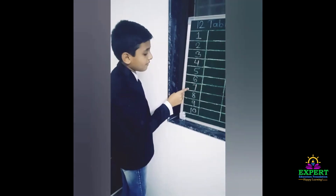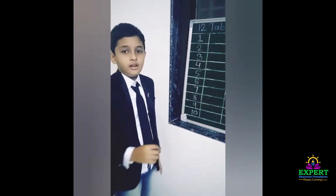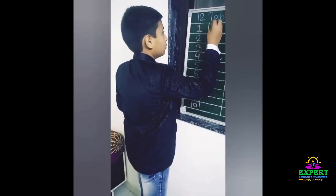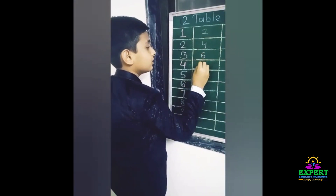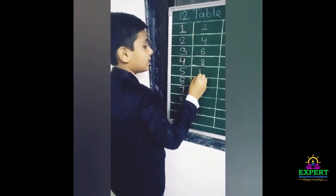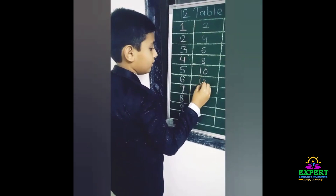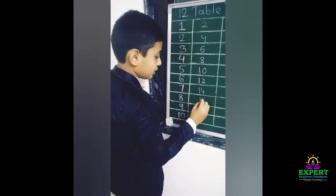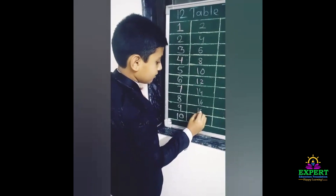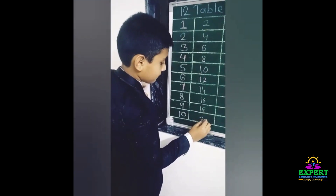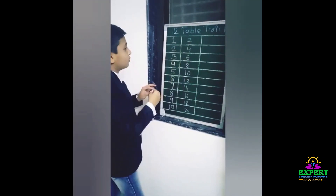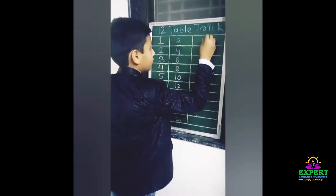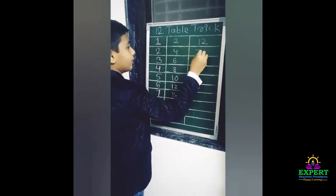...three, four, five, six, seven, eight, nine, ten. Then we will write the 2 table: two, four, six, eight, ten, twelve, fourteen, sixteen, eighteen, twenty. Now we will write the 12 table: one times twelve is twelve, two times twelve is twenty-four, three times twelve is thirty-six, four times twelve is forty-eight.